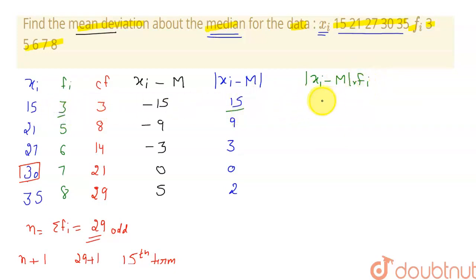So 15 into 3 will give me 45. Now 9 into 5 will give me 45. And this 3 into 6 will give me 18. 0 into 7 will give me 0. And 2... wait a minute. This is 5. Not 2. This is 5.